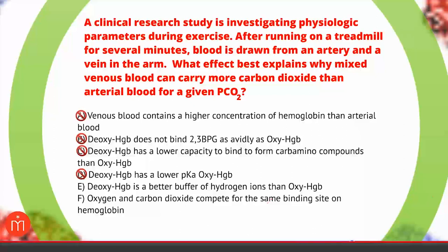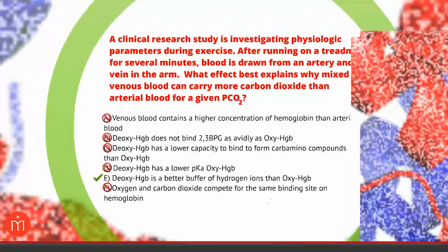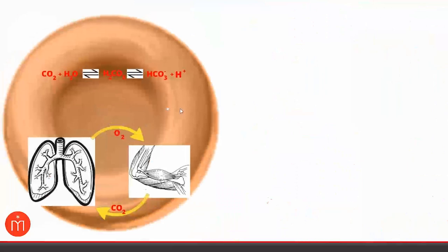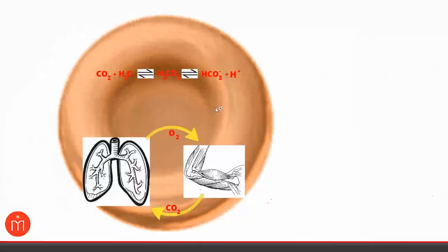Choice F: oxygen and carbon dioxide compete for the same binding site on hemoglobin. We just established that O2 and CO2 bind at different sites — that's allosteric, not competitive interaction. Choice F is a false statement, so it cannot be the answer. By process of elimination we're left with choice E: deoxyhemoglobin is a better buffer of hydrogen ions than oxyhemoglobin. We need to fully understand this principle.